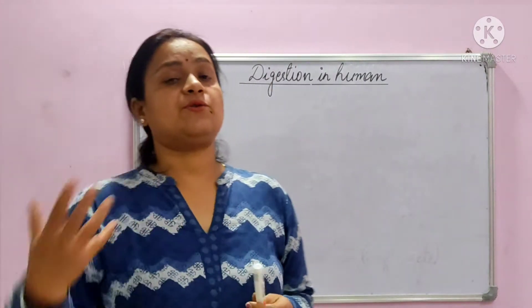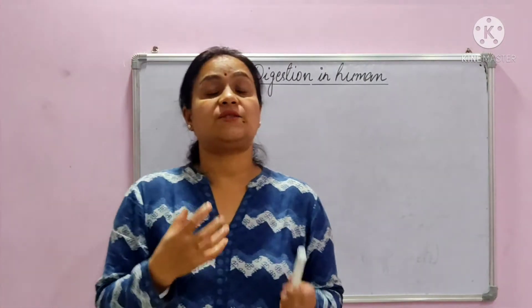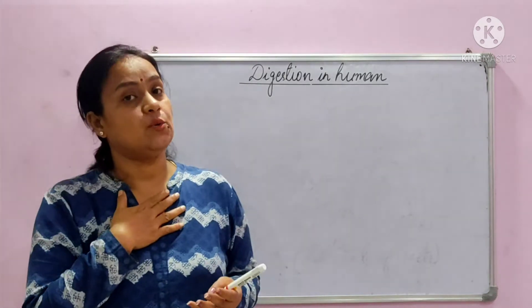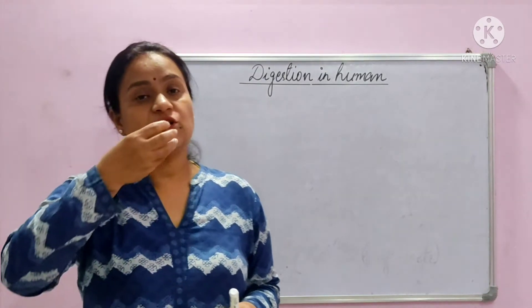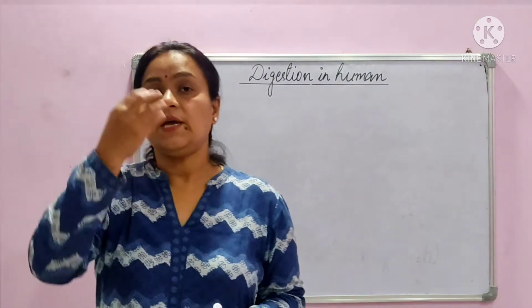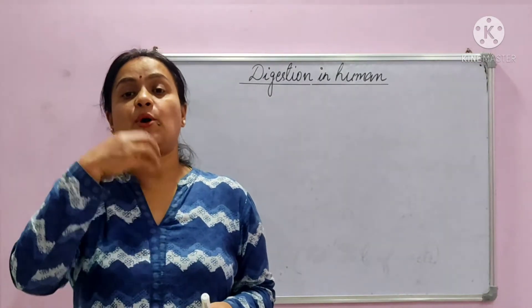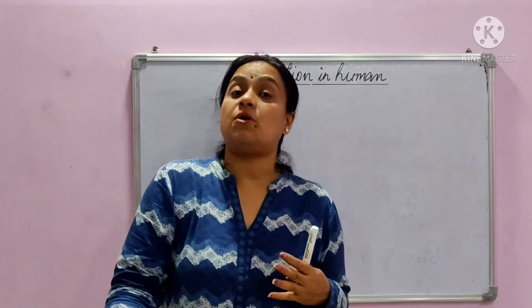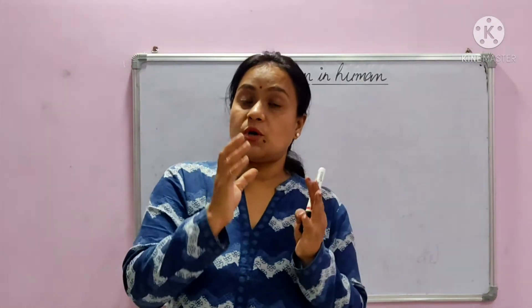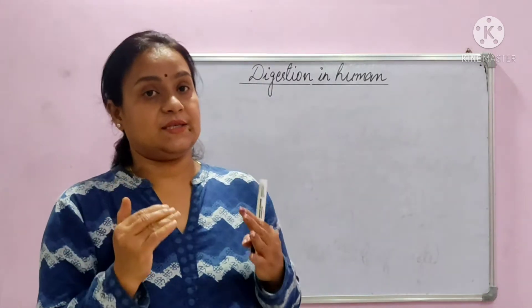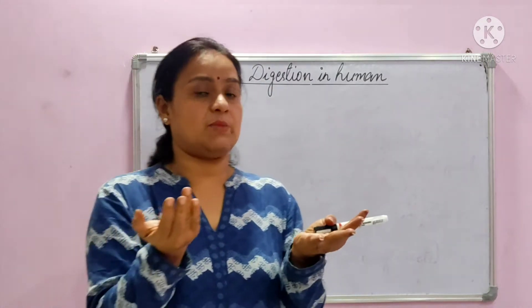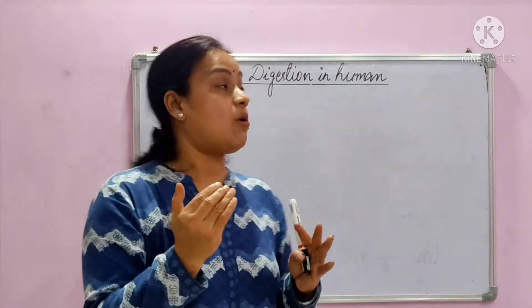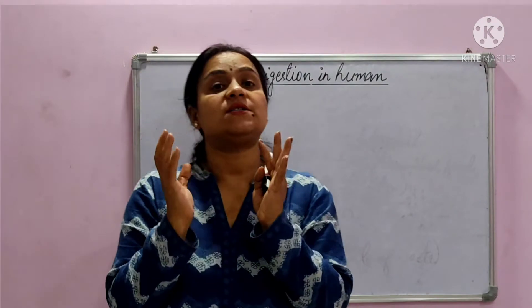We all know that in heterotrophic nutrition, nutrition starts from ingestion — that is, the food is taken in. For example, we humans are heterotrophs. So when we talk about ingestion, food goes inside our body through the mouth and then travels through different organs. This whole system of organs which together help in digestion of food is called the digestive system.